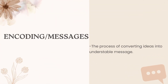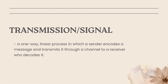The second element is encoding or messages — the process of converting ideas into an understandable message, or turning thoughts into communication. The next one is transmission or signal: a one-way linear process in which a sender encodes a message and transmits it through a channel to a receiver who decodes it.